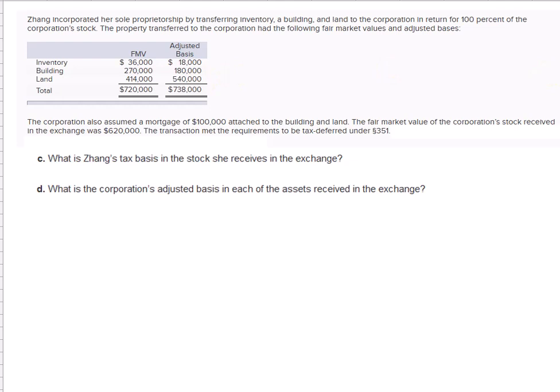Now, it also tells us that the corporation also assumed a mortgage of $100,000 attached to the building and land. Fair market value of the corporation's stock received in the exchange was $620,000, and the transaction met the requirement to be tax-deferred under Section 351.